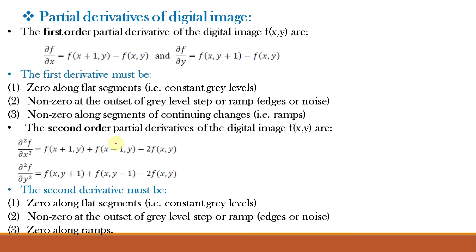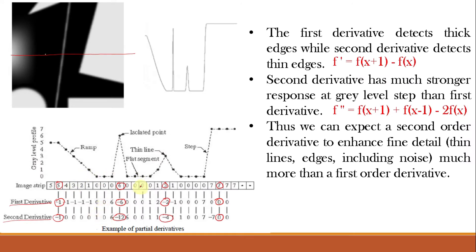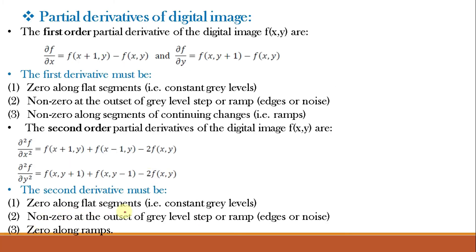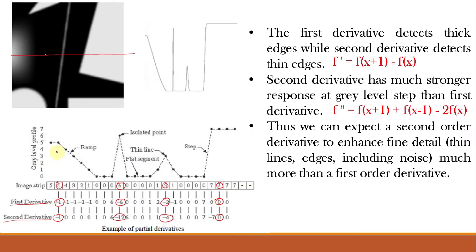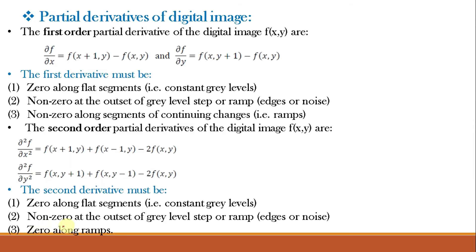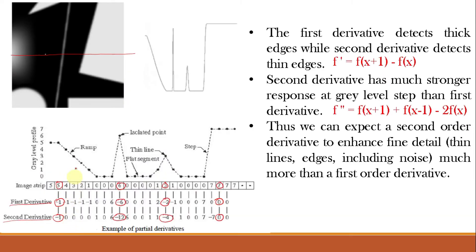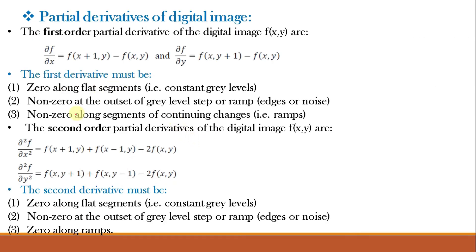For the second derivative: it must be 0 along flat segments of constant gray level. It is non-zero at the outset of a gray level step or ramp — edges or noise. However, it is 0 along the ramps. So the first and second order derivatives have distinct properties regarding flat regions, edges, and ramps.